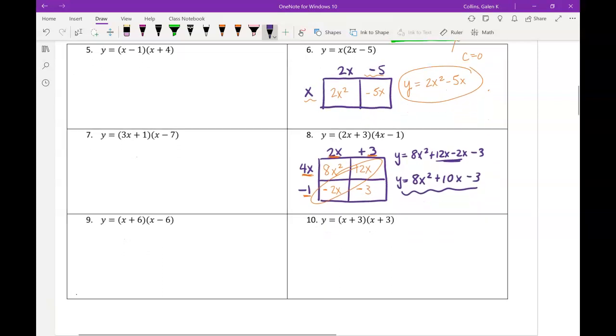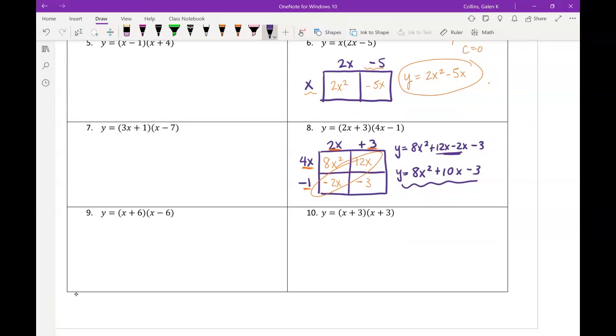All right, one more of these. When we see x plus 3 times x plus 3, remember that is the same as x plus 3 squared. So that helps us know that this is a perfect square. So you might be able to do this one faster. We were working with squares a lot in the first part of unit 7.